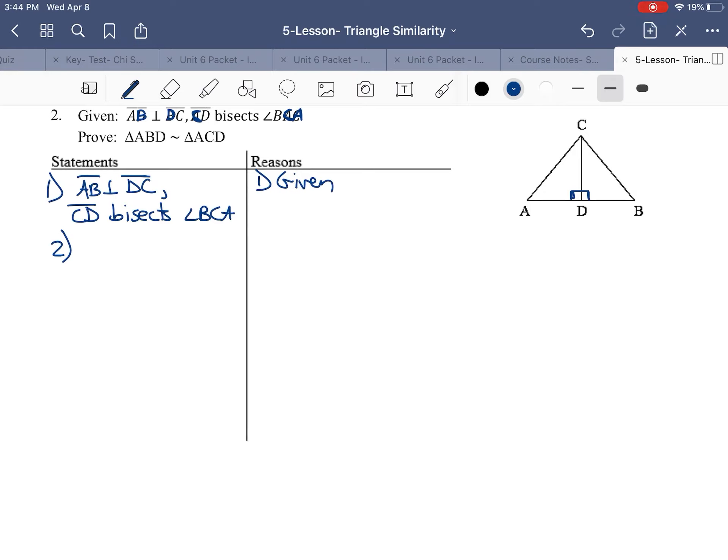So, I'm going to jump right to angle ADC congruent to angle BDC. Oh, that should be two. And that's going to be perpendicular lines form right angles.